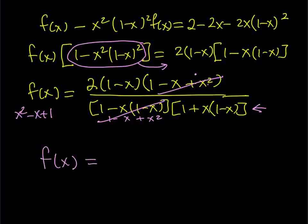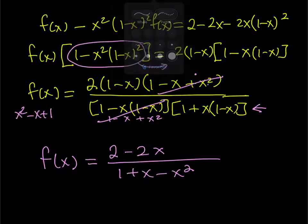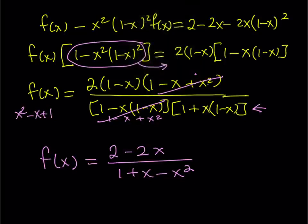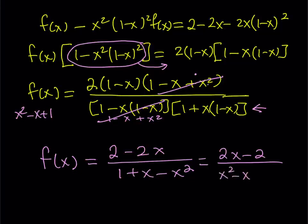So from here, f of x is going to equal, and if I go ahead and distribute this, I should be getting something like 2 minus 2x from the numerator, and the denominator is going to be 1 plus x minus x squared. If you wanted to simplify this a little bit, if you're really picky about writing it in standard form, you can just go ahead and write it this way, 2x minus 2, by negating the top and the bottom, you should be getting something a little nicer, x squared minus x minus 1.